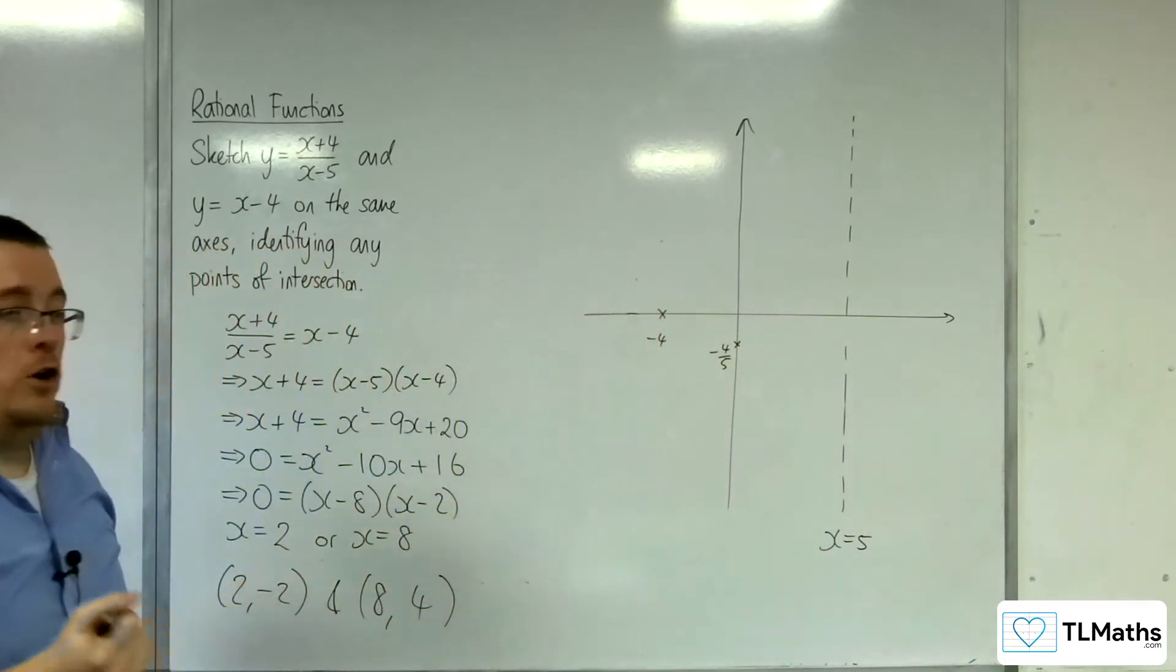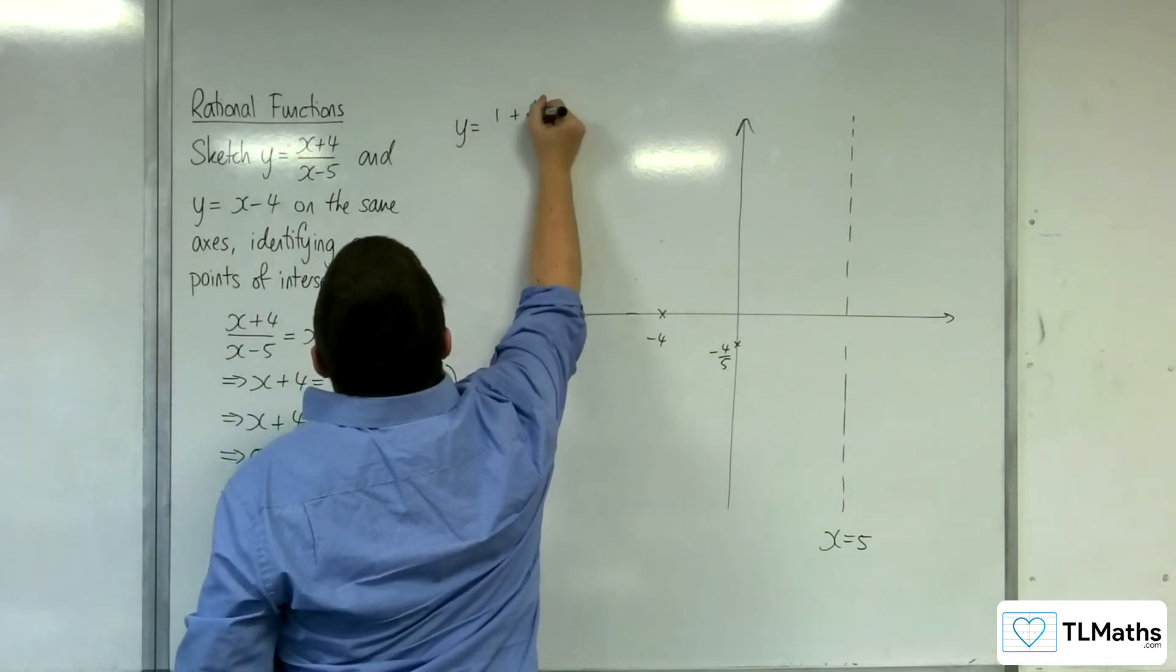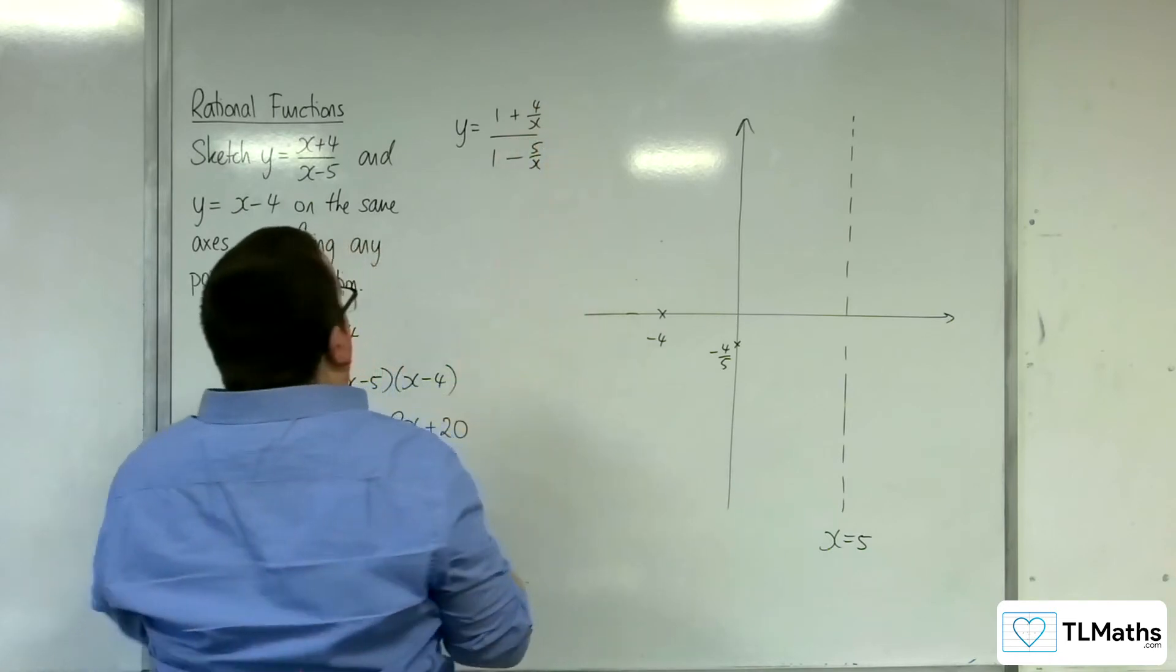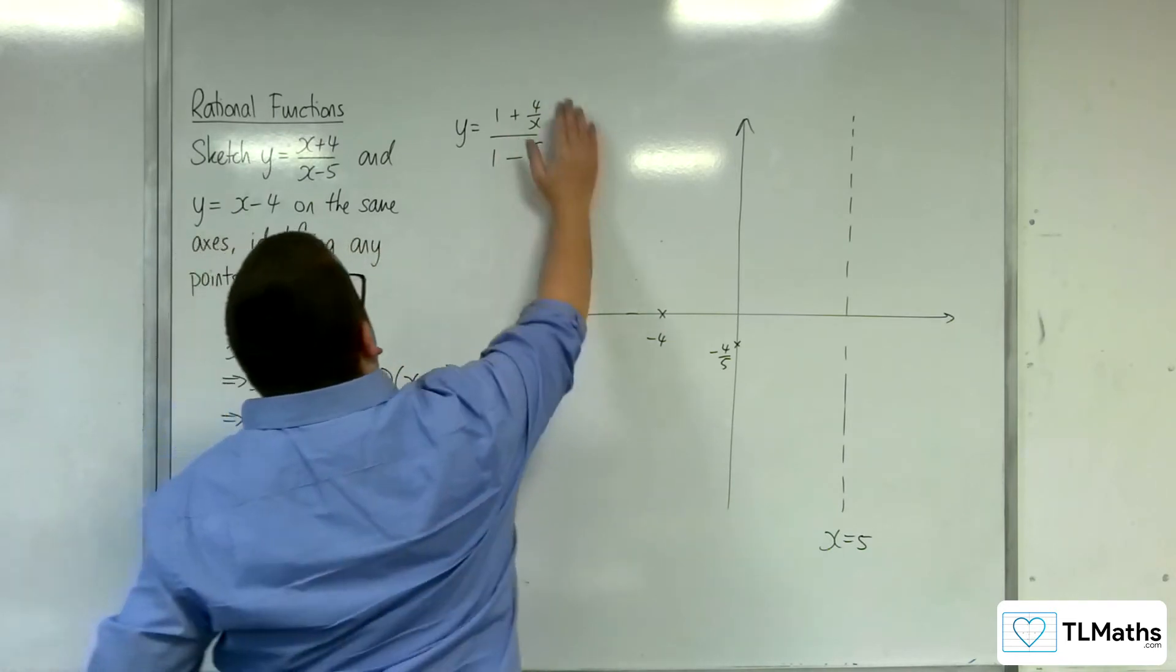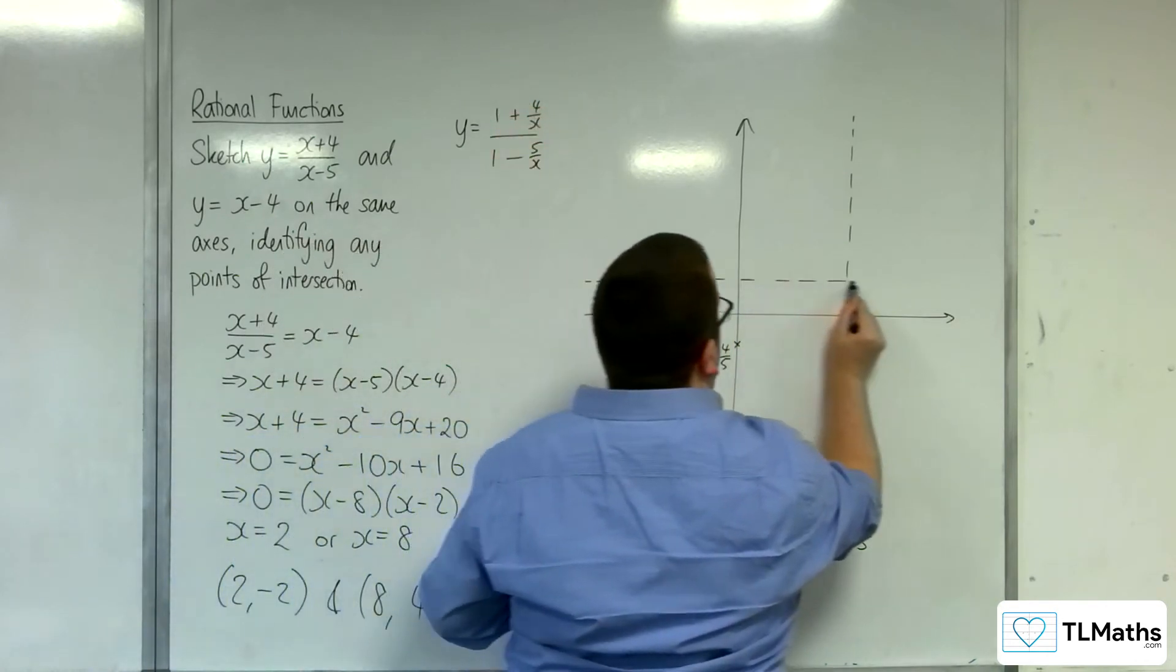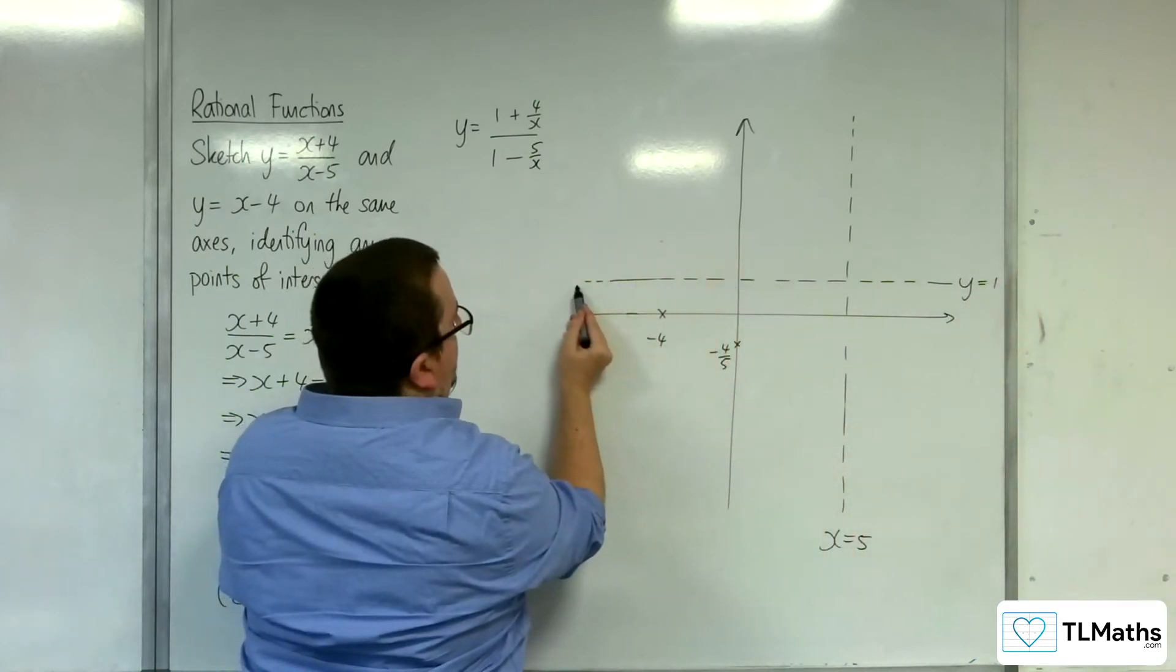And finally, horizontal asymptote. So divide top and bottom by x. 1 plus 4 over x over 1 take away 5 over x. So as x gets larger and larger in either direction, we're tending towards y equals 1 over 1. So y equals 1.